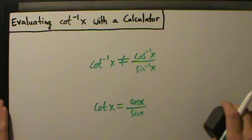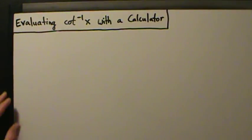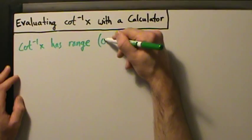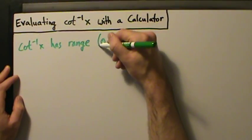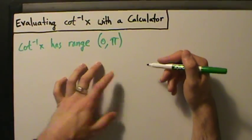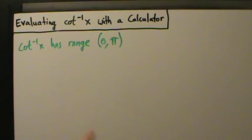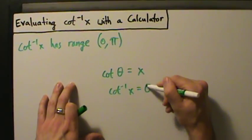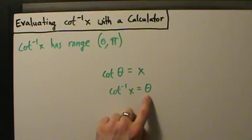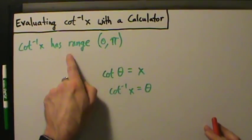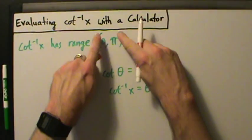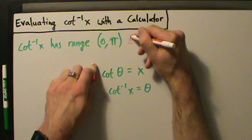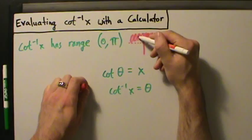What we are going to do is relate inverse cotangent back to inverse tangent some other way. Let's start the same way we started the other videos. Inverse cotangent of x, the way we defined it, has range 0 to π. Remember, we can take the cotangent of some angle θ and get some number x, or we can take the inverse cotangent of some number x and get some angle θ. If we interpret that as an angle θ in the range 0 to π — open parentheses, so not including 0 or π — that range looks like the upper half of the unit circle from 0 to π.